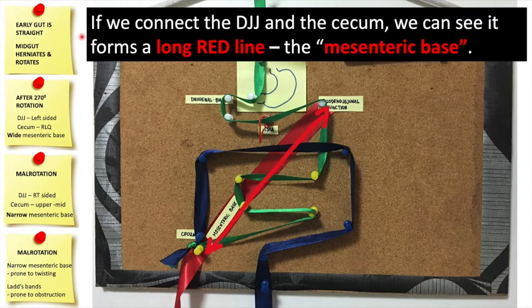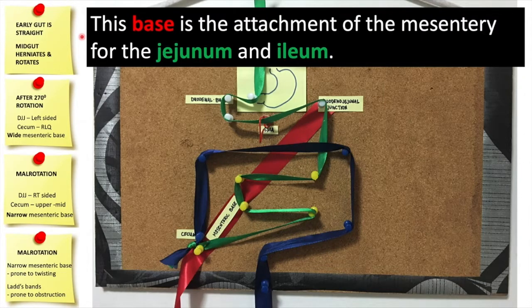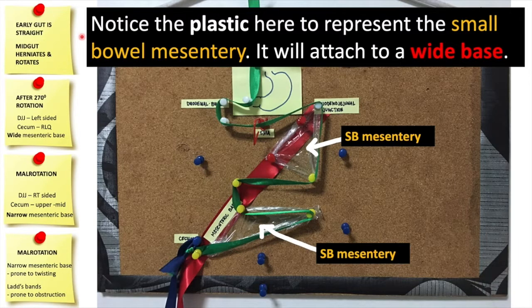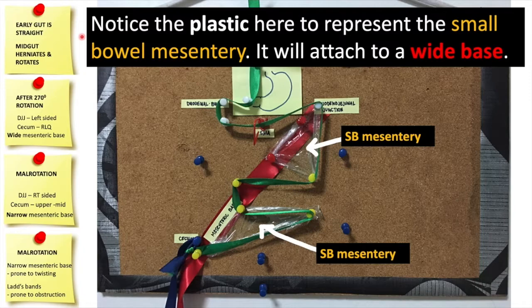If we connect the DJJ and the cecum, we can see it forms a long red line. We call this the mesenteric base. This base is the attachment of the mesentery for the jejunum and ilium. Notice that the plastic here will represent the small bowel mesentery. It will attach to a wide base represented by the red ribbon.